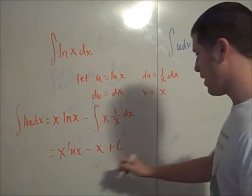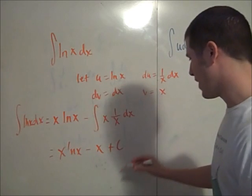So, that's it. The integral of log x dx is x log x minus x plus c.